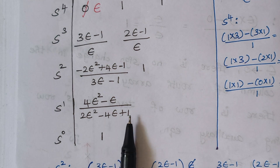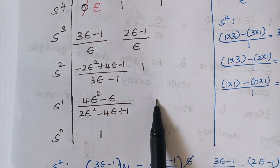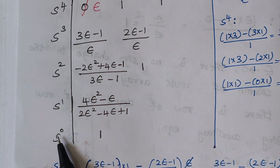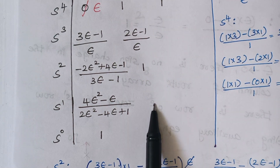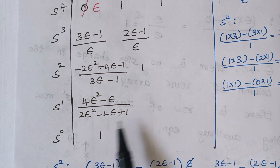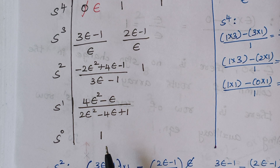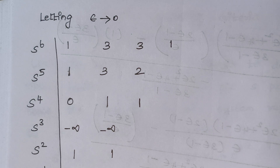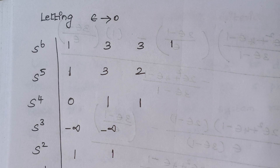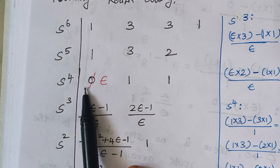For the s^0 row, this term multiplied by 1 minus 0 into the other term, divided by that same term — both terms are equal so they cancel, giving s^0 = 1. The next step is substituting ε = 0 into the Routh array to see what happens. Substituting ε = 0: the ε term in the s^4 row becomes 0.